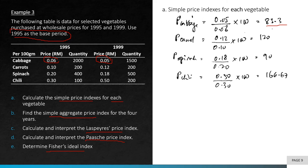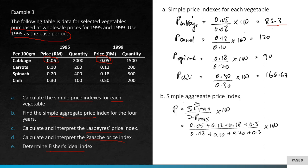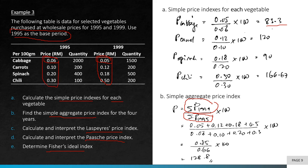For part B, the simple aggregate price index: sum of all current prices over sum of all base prices times 100. Looking at the table, the total current period prices divided by the total base period prices times 100 gives 128.8.